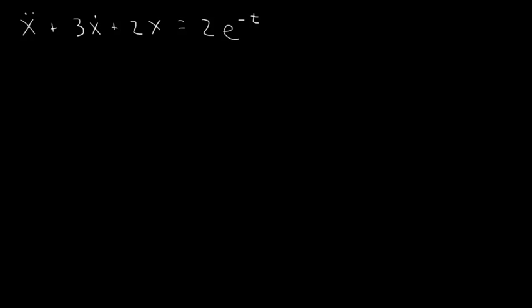Let's solve x double dot plus 3x dot plus 2x equals 2 times e to the minus t. We just want to find a particular solution here.